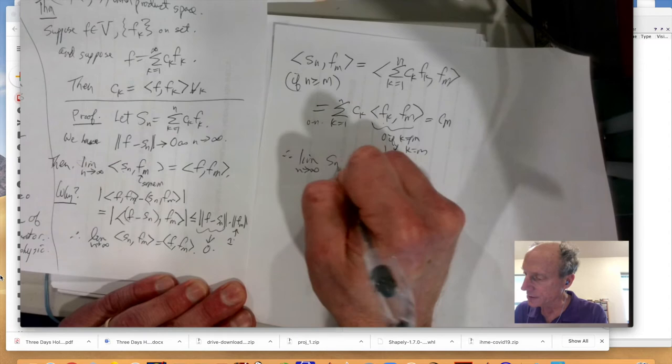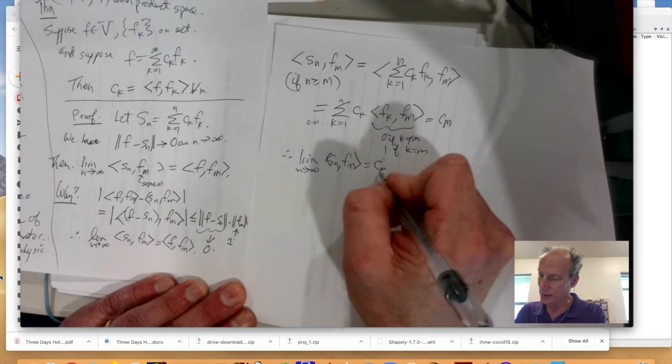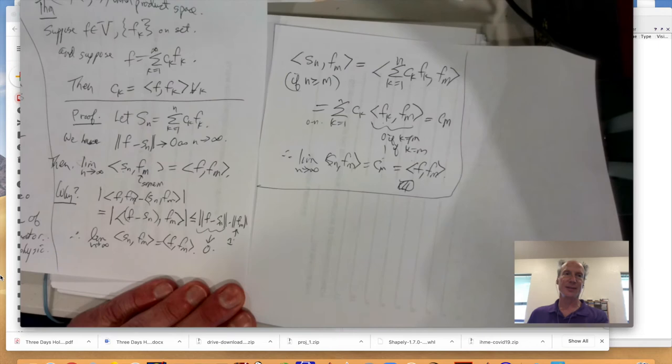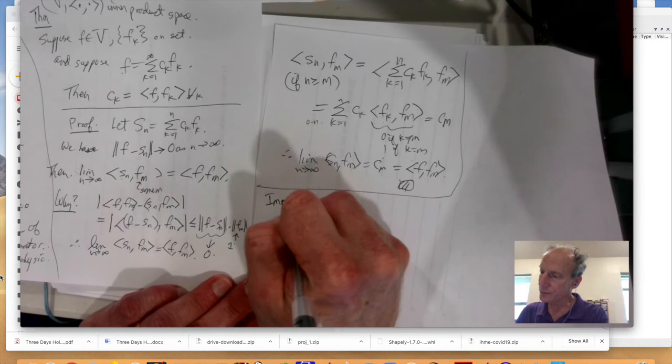And so, therefore, the limit as N goes to infinity of SN with FM, see, that's independent of N as long as it's big enough, is equal to CM. And this equals to the inner product of F with FM. Here we do. So, we have proven that theorem. Excellent. So, you can always compute those constants if you know this is equal to that. That's great. So, we'll be doing that with the trig functions later.